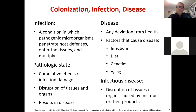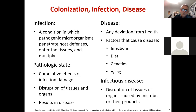Infection is a condition in which pathogenic microorganisms penetrate host defenses, enter tissues, and multiply. This can result in a pathological state — the cumulative effects of infection damage and disruption of tissues — which results in disease. Disease is broadly anything that deviates from health, and that's not just infections. Diet, genetics, being born with a genetic defect, and even aging can be considered a diseased state. Infectious disease is the disruption of tissues or organs caused by microbes or their products.